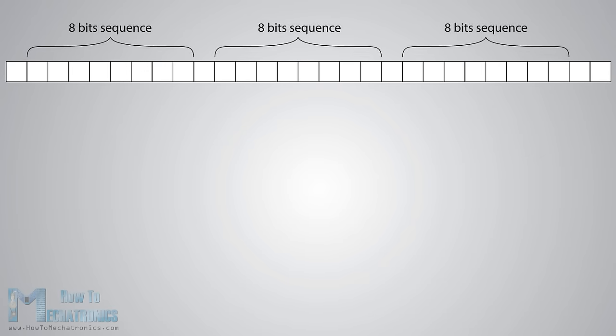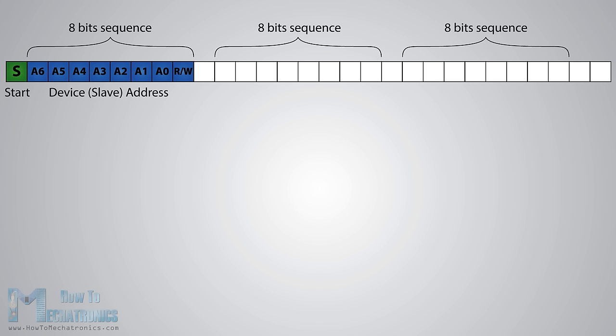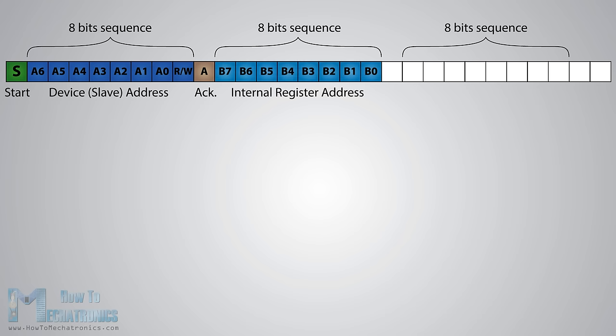Now let's see the data protocol of the I2C bus. The data signal is transferred in sequences of 8 bits. After a special start condition occurs comes the first 8-bit sequence which indicates the address of the slave to which the data is being sent. After each 8-bit sequence follows a bit called acknowledge. After the first acknowledge bit, in most cases comes another addressing sequence for the internal registers of the slave device. After the addressing sequences follows the data sequences until the data is completely sent, and it ends with the special stop condition.